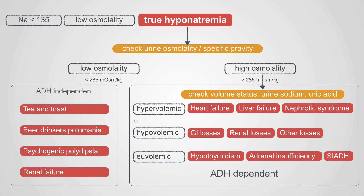Hypervolemic patients will have a urine sodium less than 20 and a high uric acid — not necessarily frankly high, but toward the upper range of normal. Hypovolemic patients will also have a urine sodium less than 20 and a high or high-normal uric acid. Euvolemic patients will have a urine sodium greater than 20 and a low uric acid. Note that experts struggle mainly to differentiate euvolemic from hypovolemic or euvolemic from hypervolemic — not hypervolemic from hypovolemic.